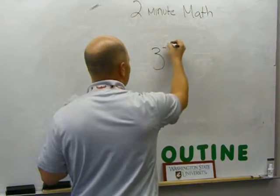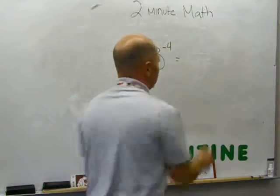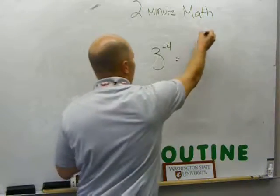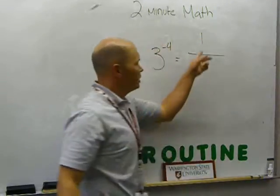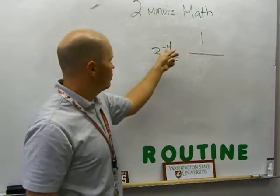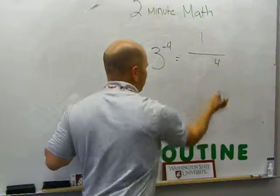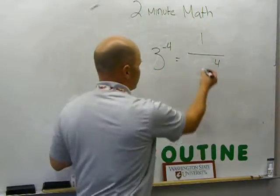We found out that if we went like 3 to the negative 4, we could rewrite that as 1 over, and as soon as we did the 1 over, we could just slide, take our negative exponent, and make it a positive exponent here, and then slide our base number down.